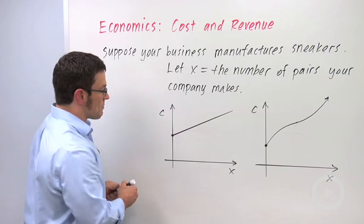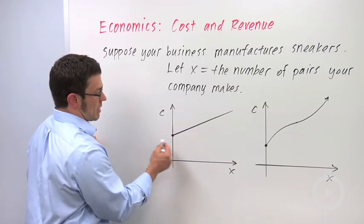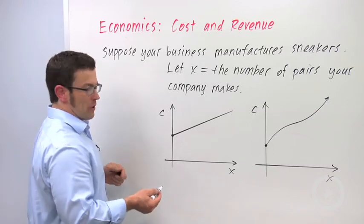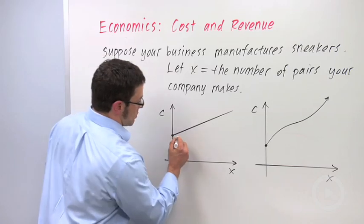If you produced zero sneakers, you would still have some cost because there are fixed costs associated with running a business, like rent for your factory or salaries for your workers, and so on. So this would be the fixed cost.